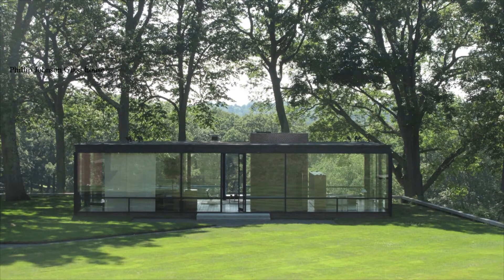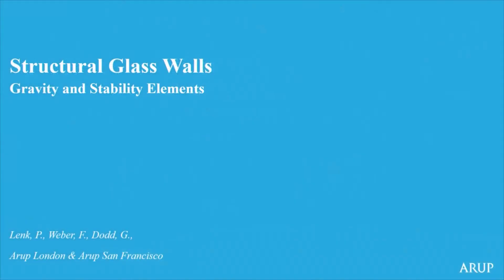That's been the kind of architectural model for the 20th century — the wall as invisible as possible, minimal structure, trying to pretend it wasn't there. Glass has become more and more structural and has been used in that role. So we're going to talk about gravity and stability elements and the use of glass walls as those stability elements.